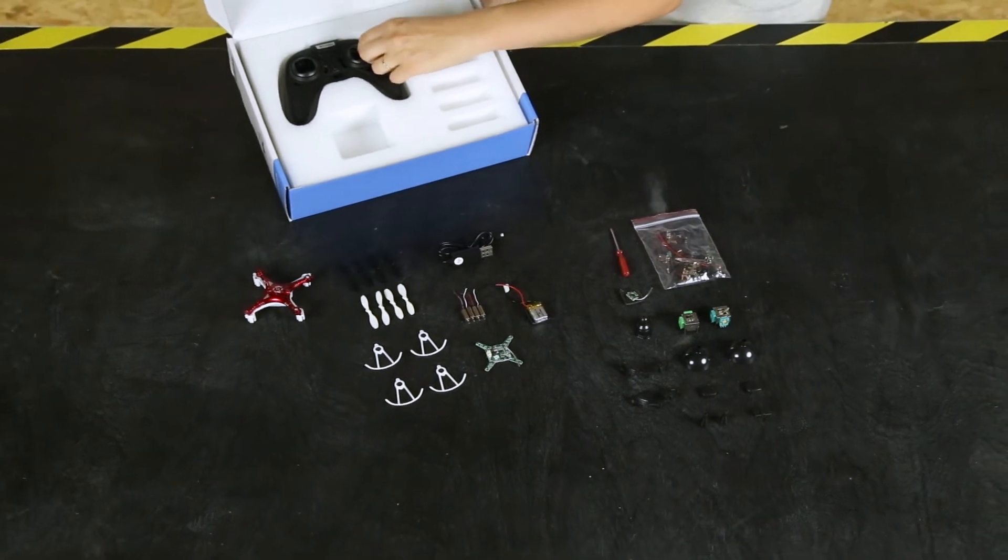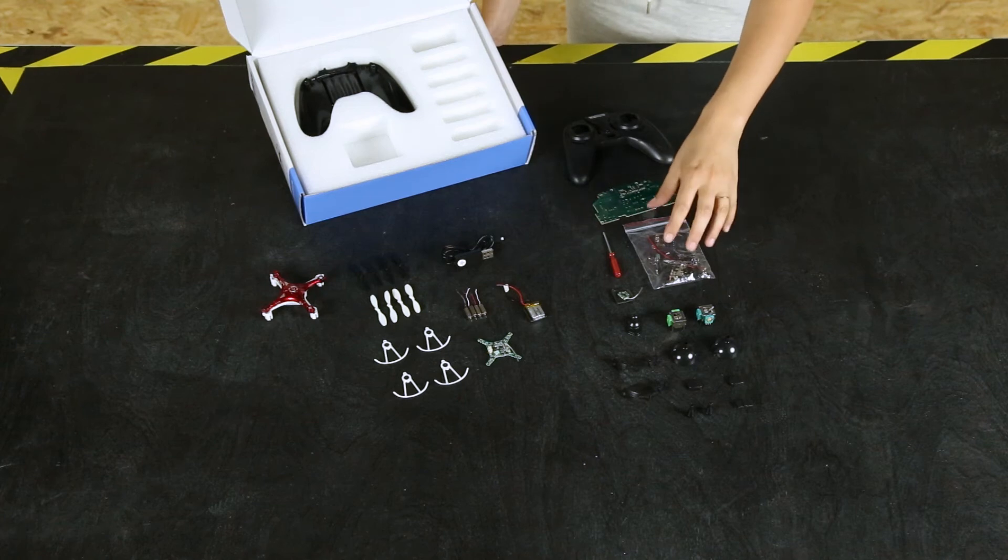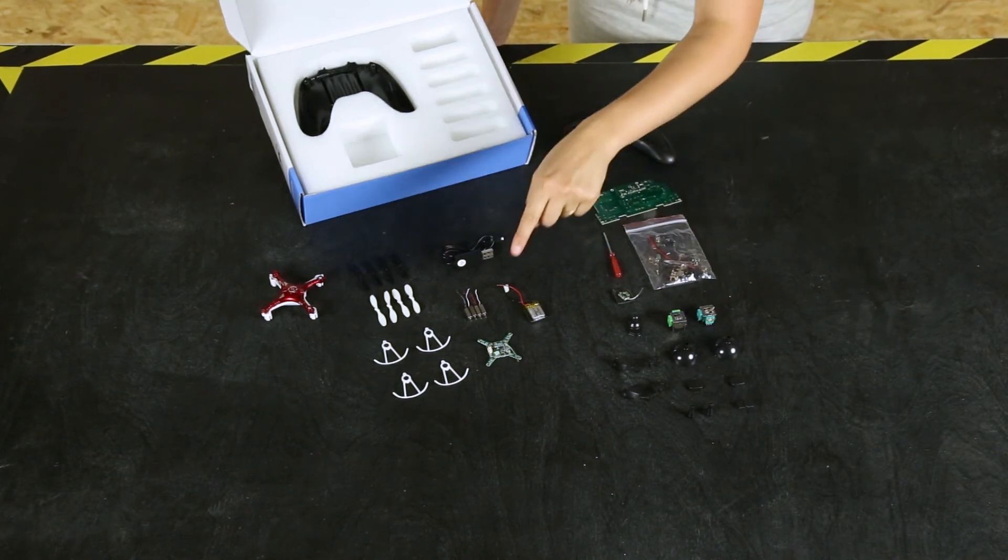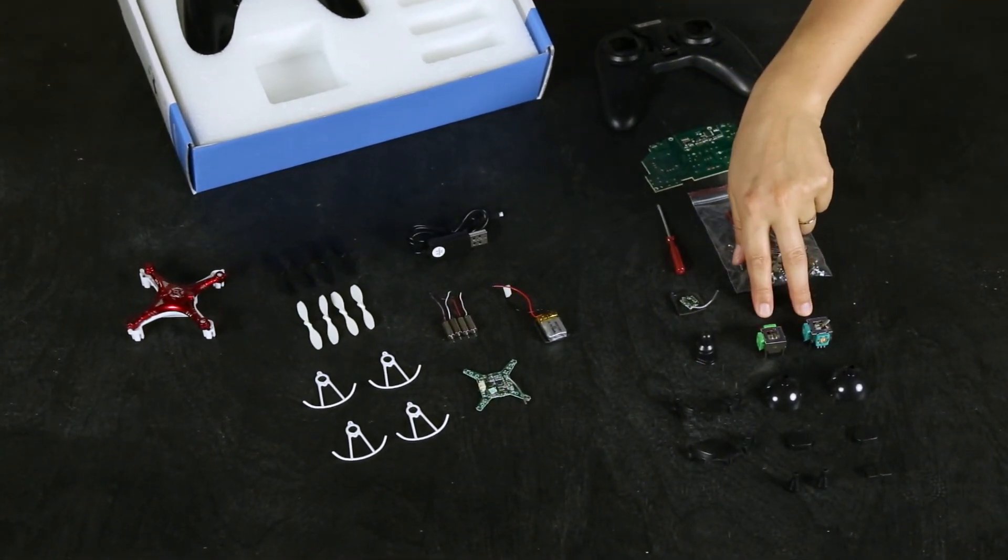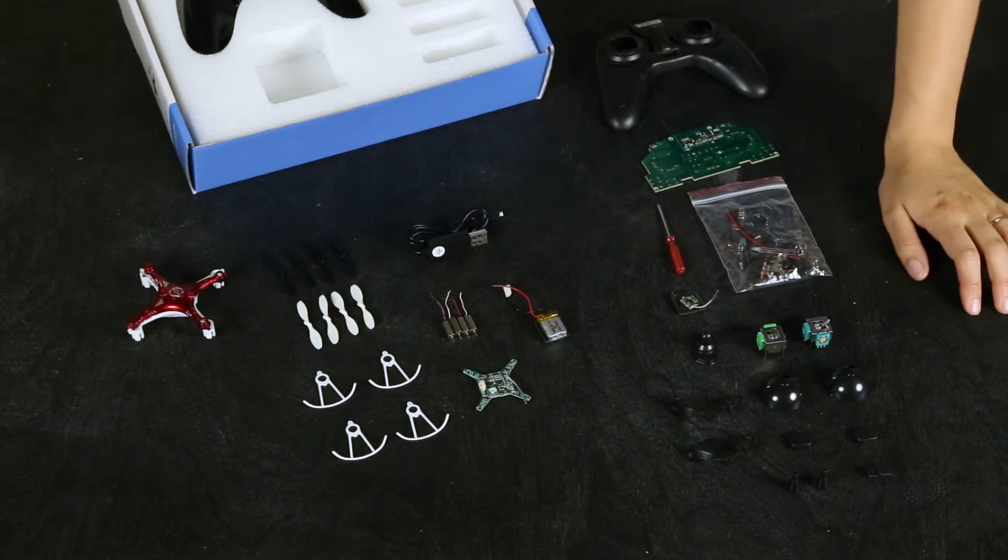Okay, moving on to the transmitter. Transmitter PCB over here, we've got some more electronics, the transceiver which communicates with the quadcopter, two joysticks of course and some more plastic parts to complete your transmitter.